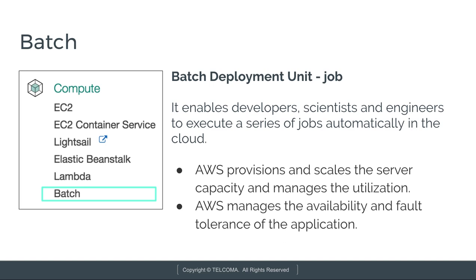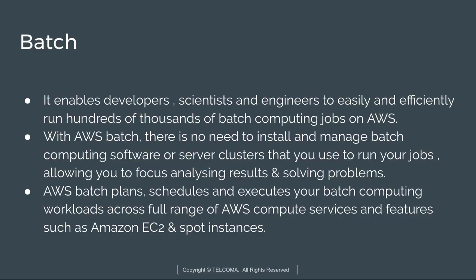AWS Batch dynamically provisions the optimal quantity and type of compute resources — like CPU and memory optimized instances — based on the volume and specific resource requirements of the submitted batch jobs. There is no need to install and manage batch computing software or server clusters. It allows you to focus on analyzing results and solving various problems, using services like Amazon EC2 and various Spot Instances.